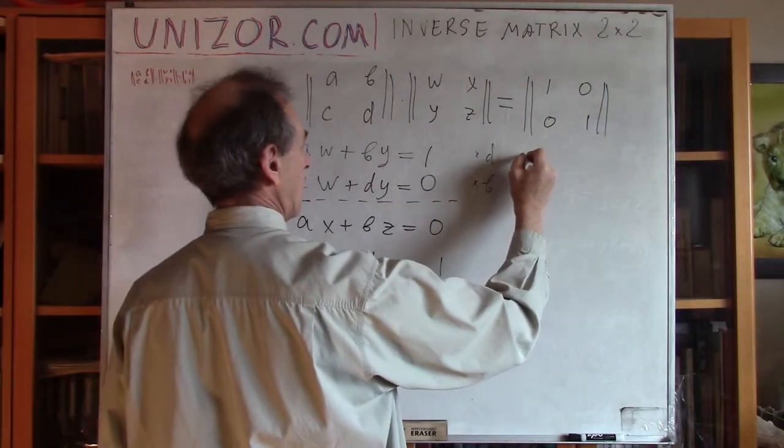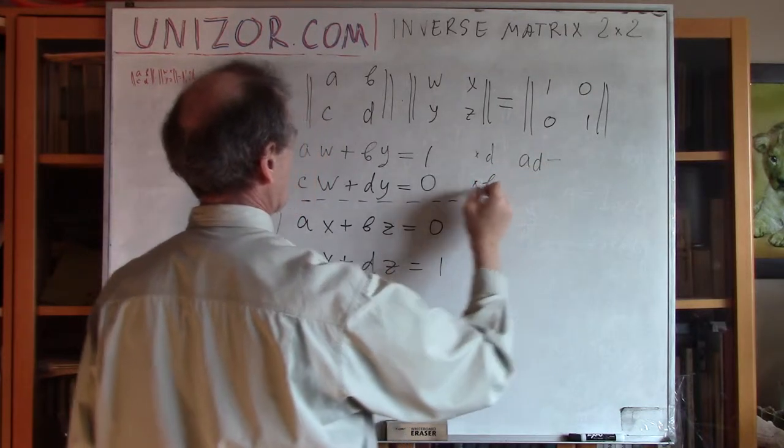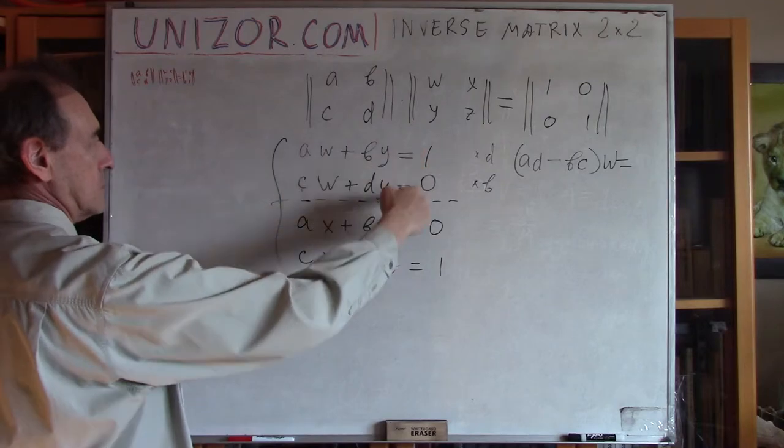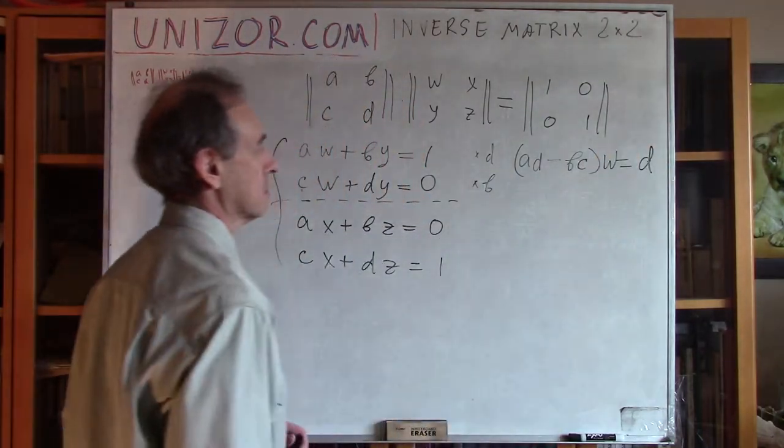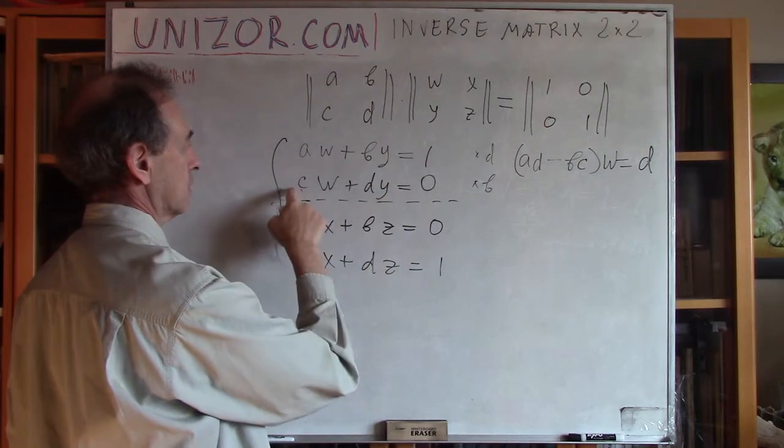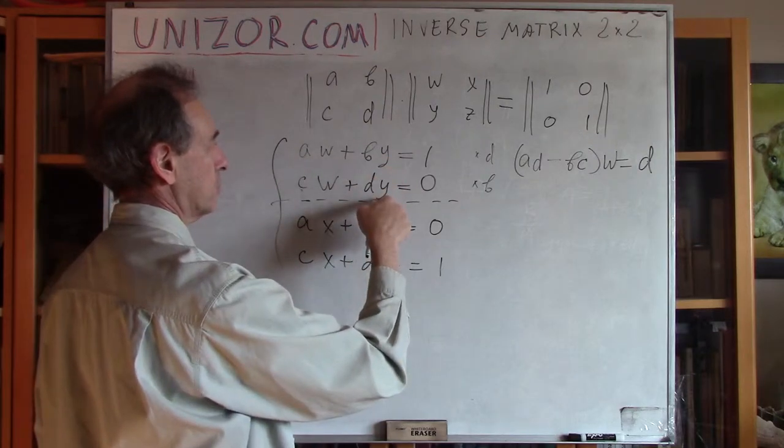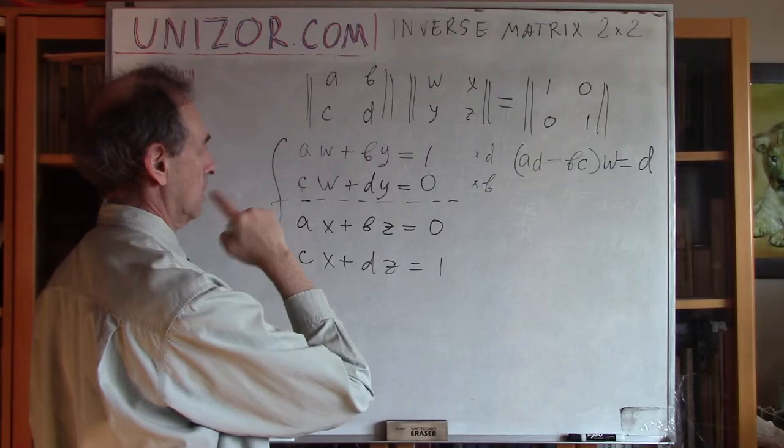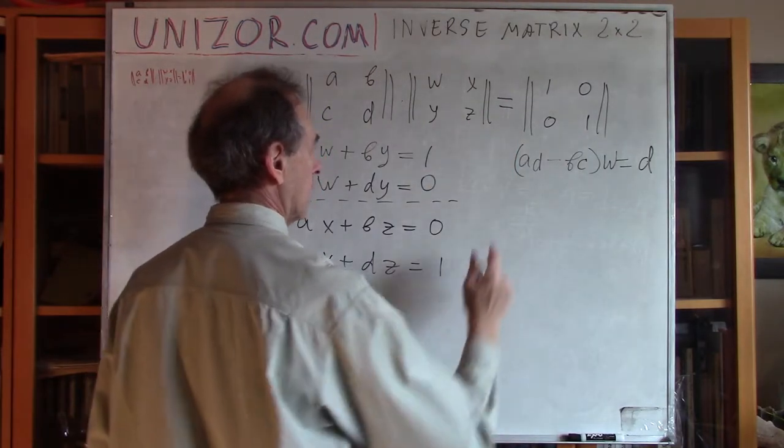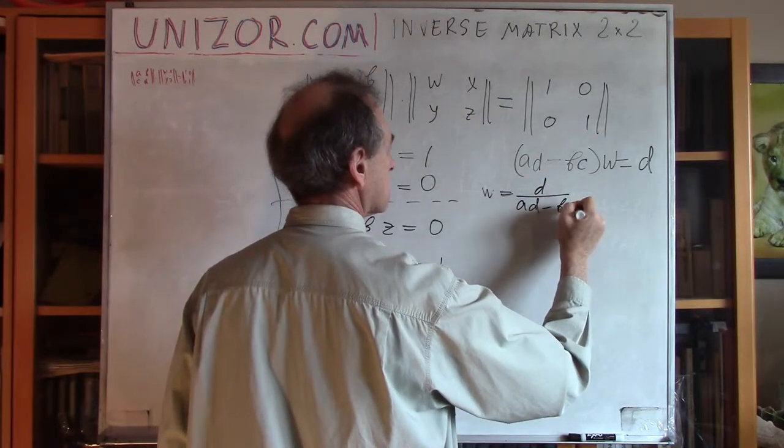So, what will be? It will be A, D, minus BC, W equals D minus zero, D. That would be, that would be from this, right? A, D, W, B, D, Y. Subtract. B, C, W and D, B, Y. Y will be cancelled out. And I have A, D minus B, C. Yeah, this seems to be correct. From which I can derive W equals D divided by A, D minus B, C.